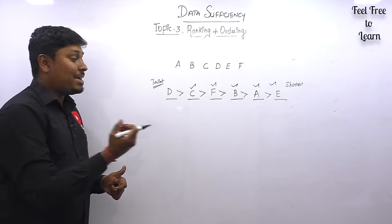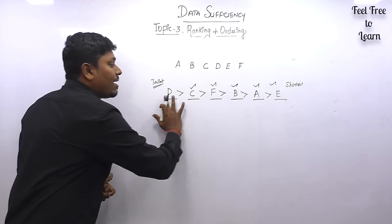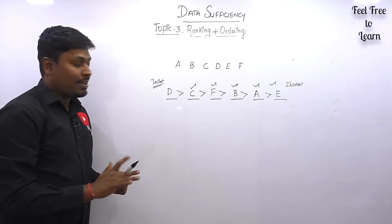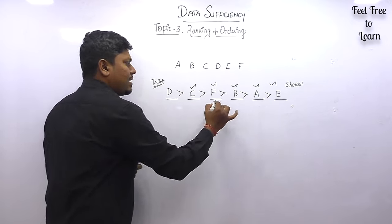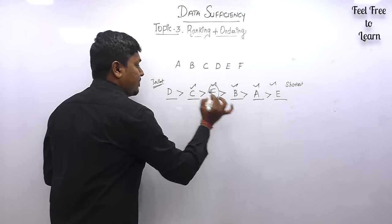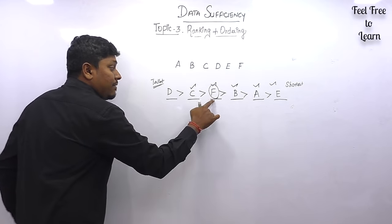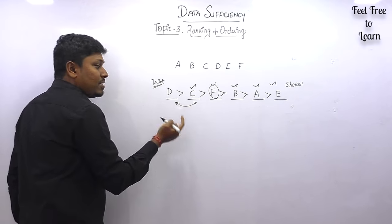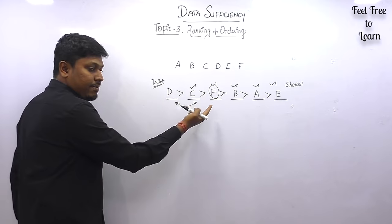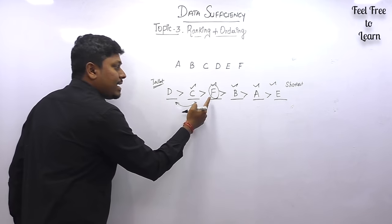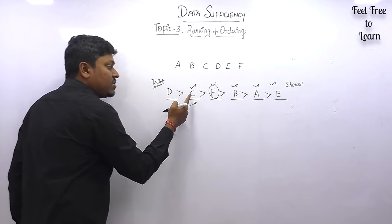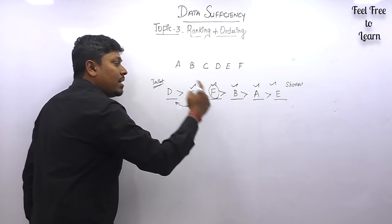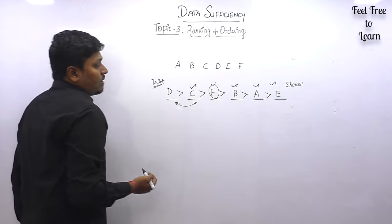The words play a major role — by seeing the words you need to arrange all the persons. For example, if we fix F, then F is shorter than two persons because D and C are taller than F, so we can say F is shorter than two persons and F is taller than three persons.